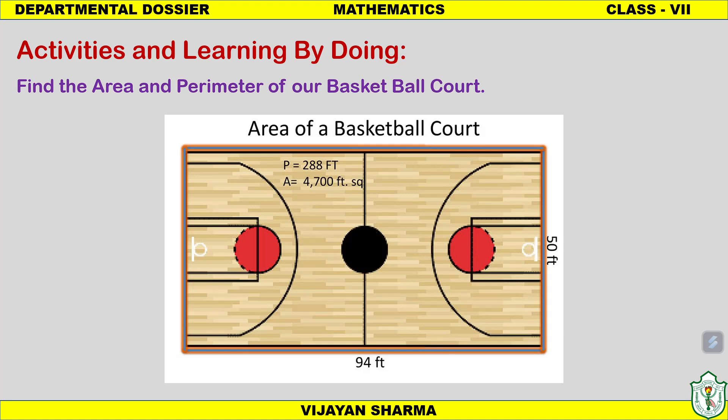Another activity is finding the area and perimeter of the basketball court in the playground — without a measuring tape. Students walk on the perimeter, and the number of steps walked gives the length of the boundary, which is the perimeter. For area, students walk the length and breadth of the court; the step count becomes the measurement, and multiplying length by breadth gives the area of the basketball court.